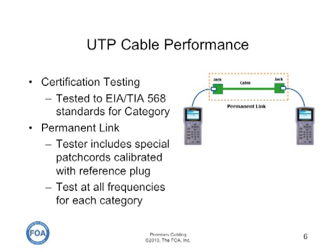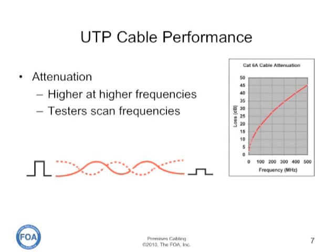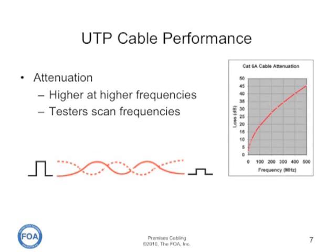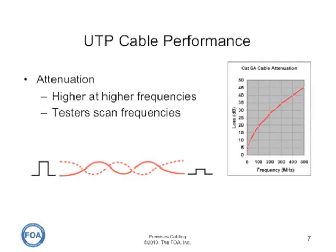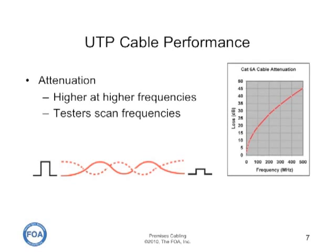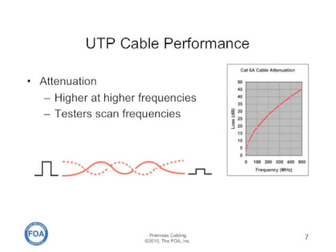Certification of the installed cable, what's called the permanent link, has to be done according to industry standards, and the standards are different for each category of cable. The permanent link includes all of the installed cable and is typically tested from the jack at the patch panel to a jack at a work area outlet. The tester includes special patch cords calibrated with a reference plug, and they test at all the frequencies required for each category. The attenuation of the cable plant is tested as the tester sweeps through the frequencies over which the cable is specified to run according to its category rating. Attenuation is higher at higher frequencies, so the testers test at multiple frequencies to see if the cable plant meets the industry standards at all specified frequencies.